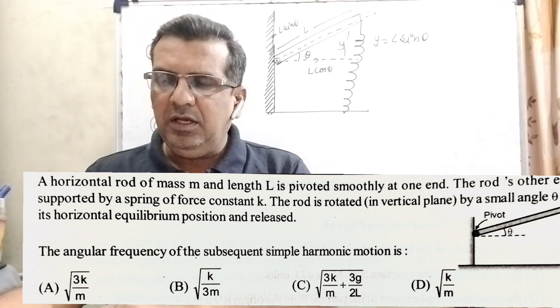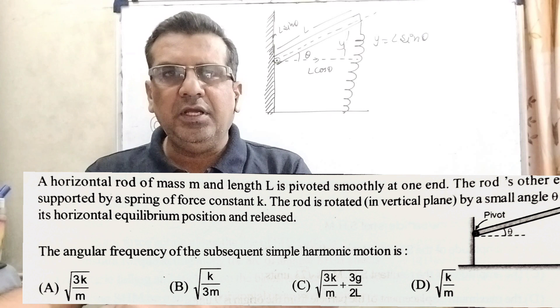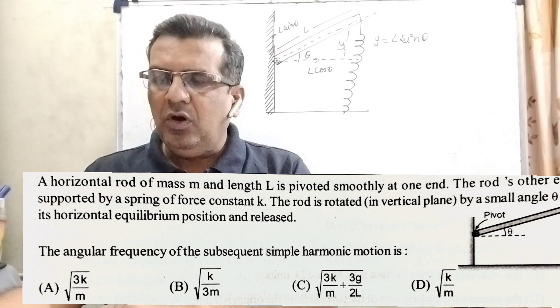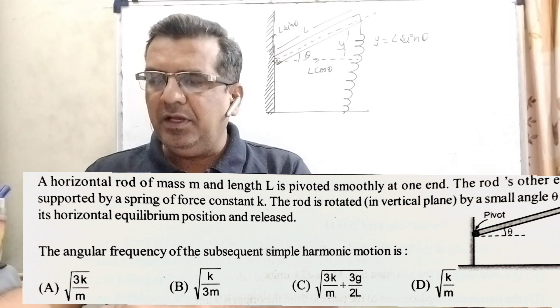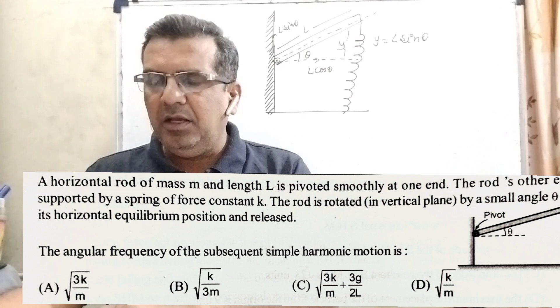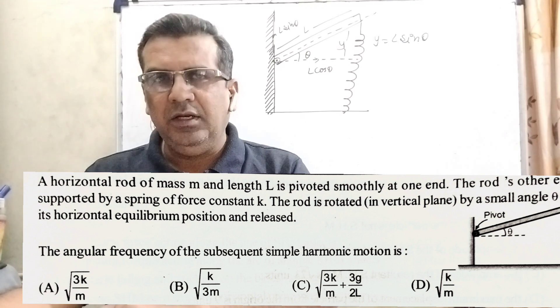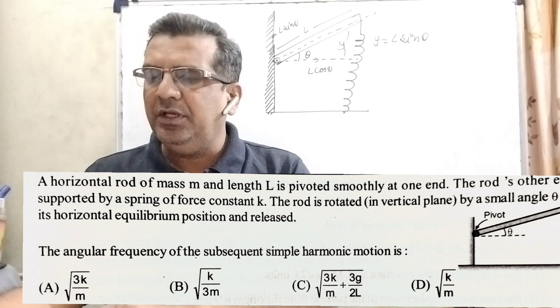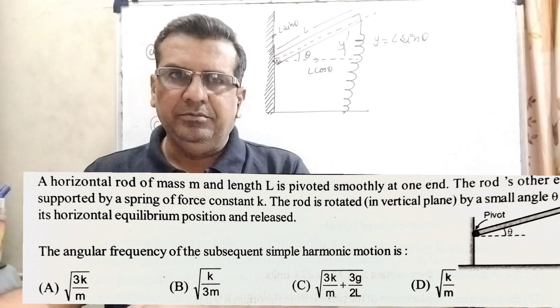Option A: root(3k/m). Option B: root(k/3m). Option C: root(3k/m + 3g/2L). Option D: root(k/m).